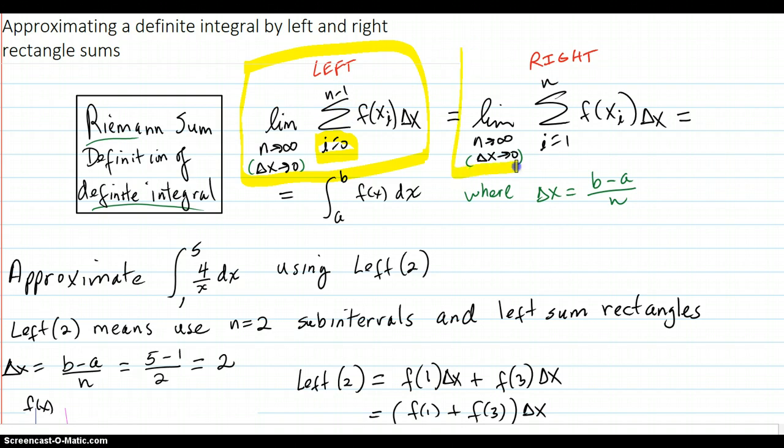Then this was the right rectangle sum, and if those limits existed and were equal to each other, then that's what was defined as the definite integral.